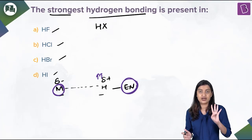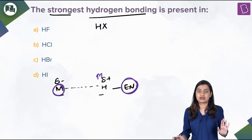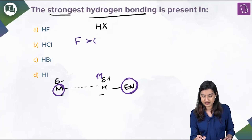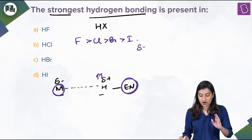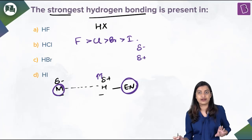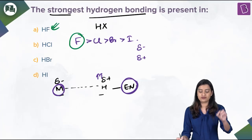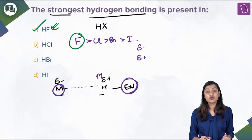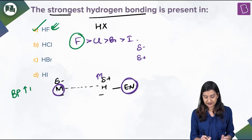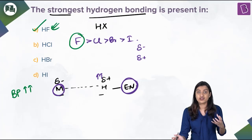Among HF, HCl, HBr, and HI, the electronegativity order is F > Cl > Br > I. Fluorine creates the maximum δ⁺ on hydrogen and maximum δ⁻ on itself, so HF has the strongest hydrogen bonding. It is also a well-known fact that due to strong hydrogen bonding, the boiling point of HF is much higher than the other hydrohalic acids. So option A, HF, is the correct answer.